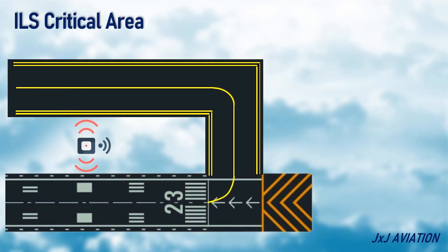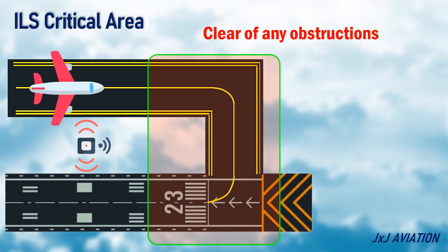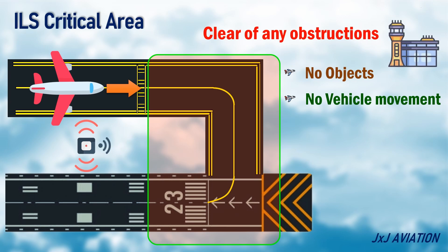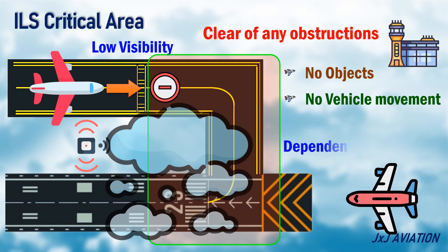ILS Critical Area. This is an area which should be clear of any obstructions. This means there should be no objects and no movement of vehicles in this area. There are markings on the taxiway which indicate that the aircraft is about to enter an ILS critical area. The ATC would restrict aircraft from entering the critical area when the visibility is low and aircraft are dependent completely on ILS signals for a safe landing.